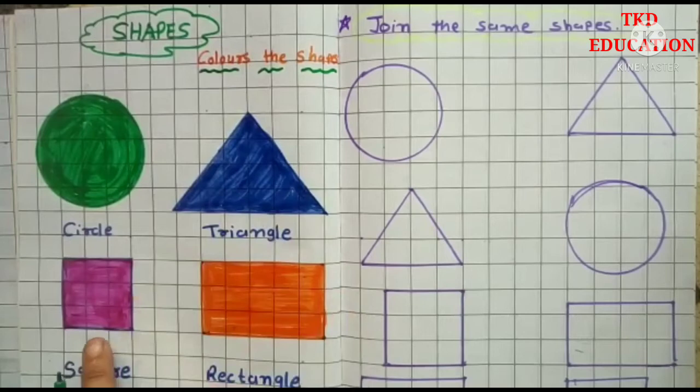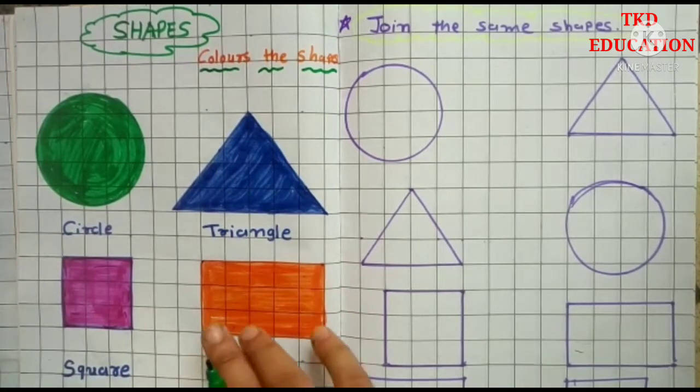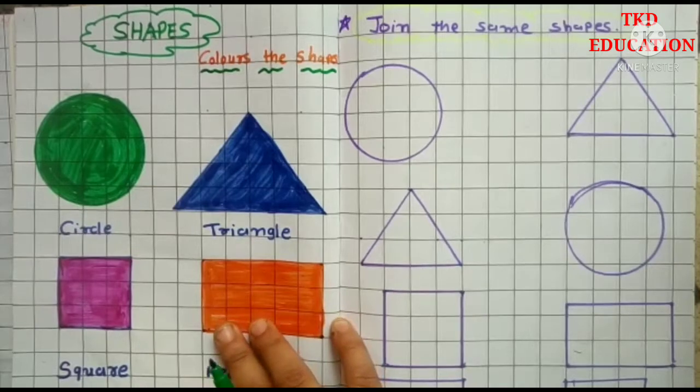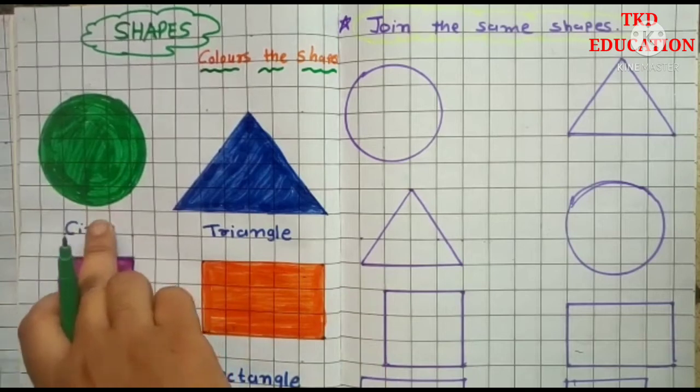Circle, triangle, square and rectangle. Yes, student. So first we will color green in circle.